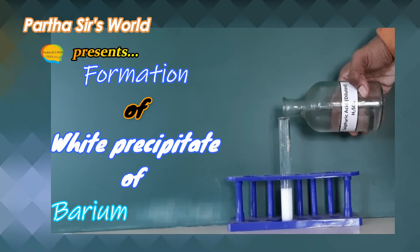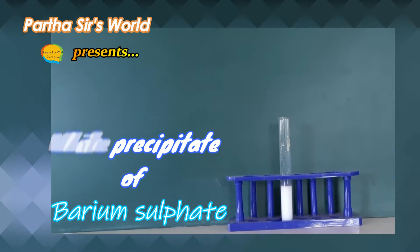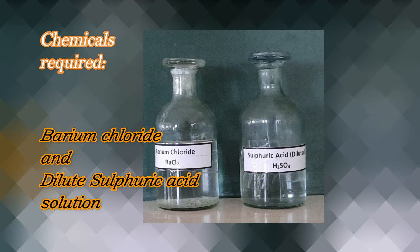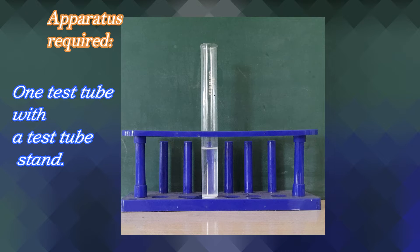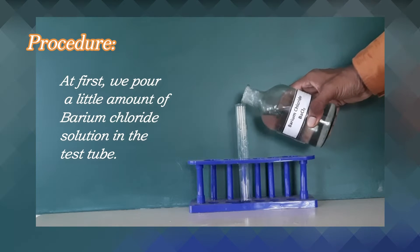Parthasar's Vault presents Formation of white precipitate of barium sulphate. Chemicals required: barium chloride and dilute sulphuric acid solution. Apparatus required: One test tube with a test tube stand. Procedure: At first,